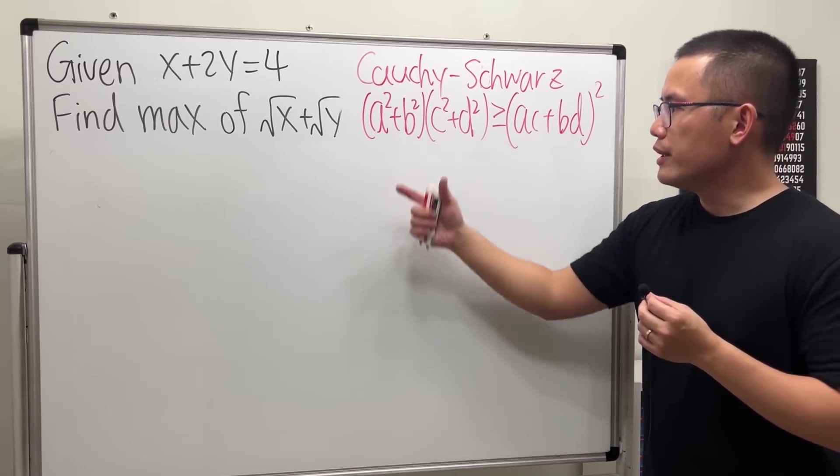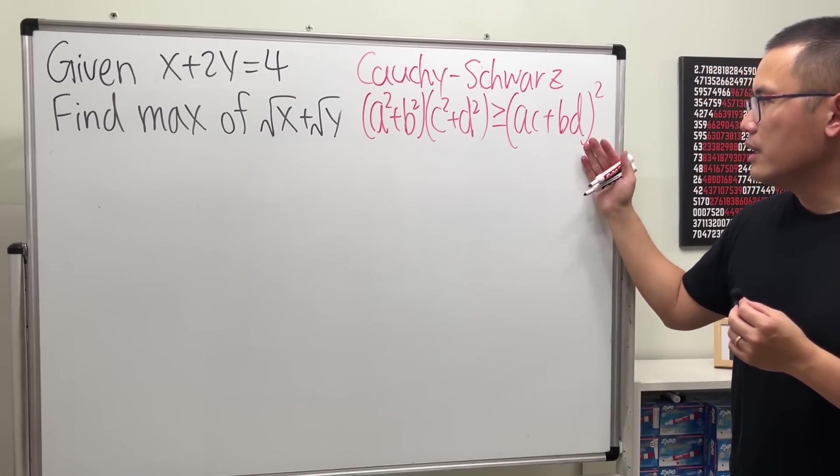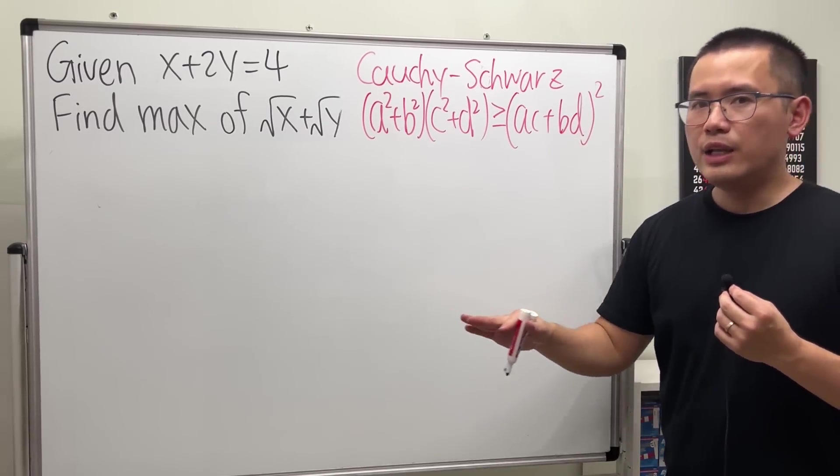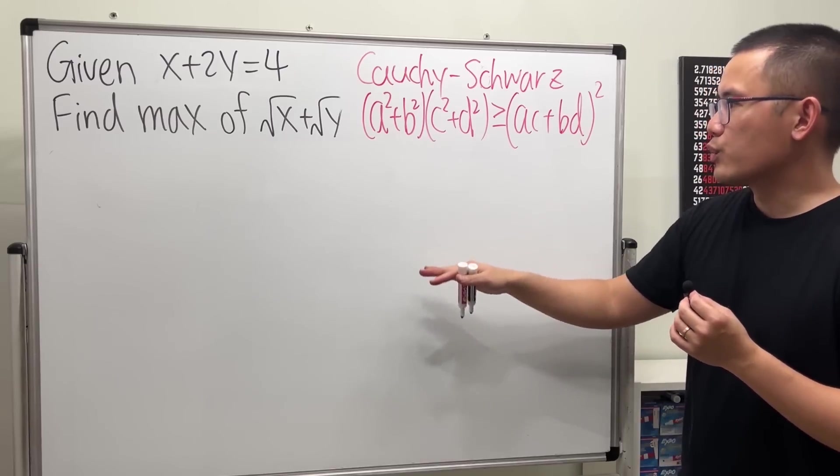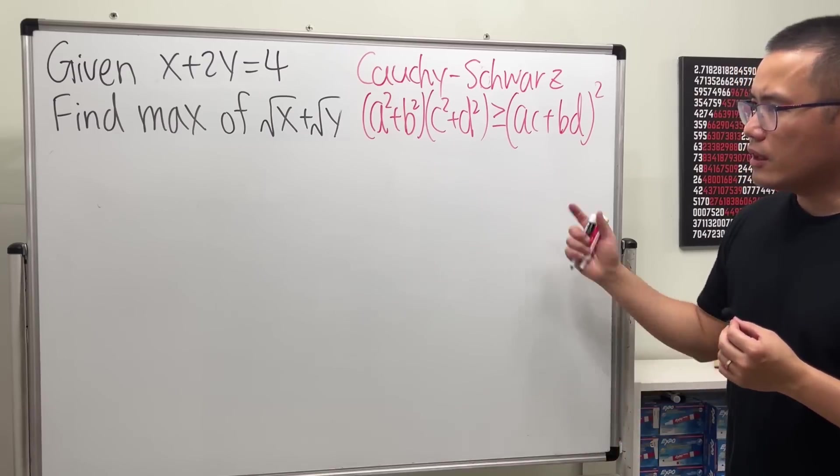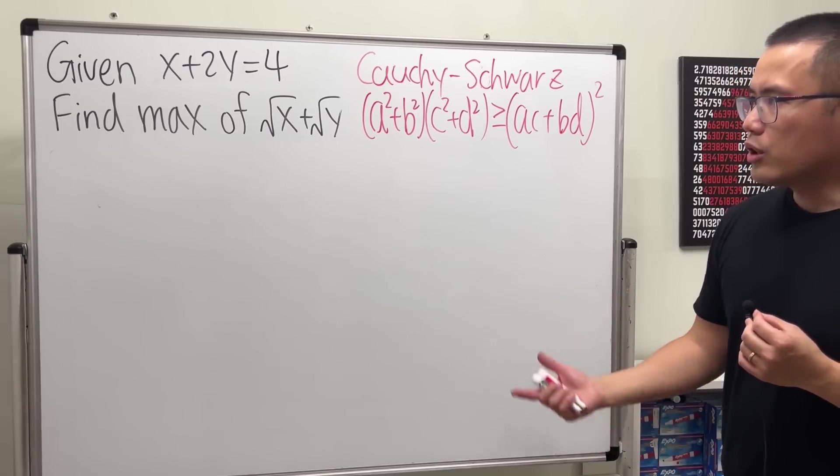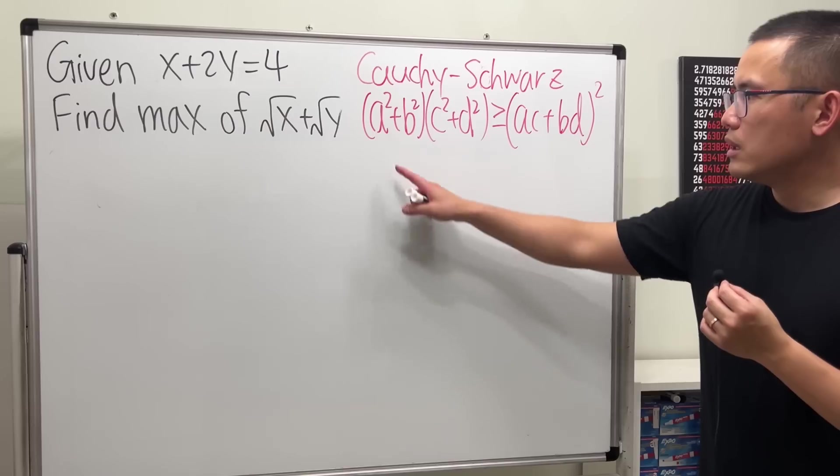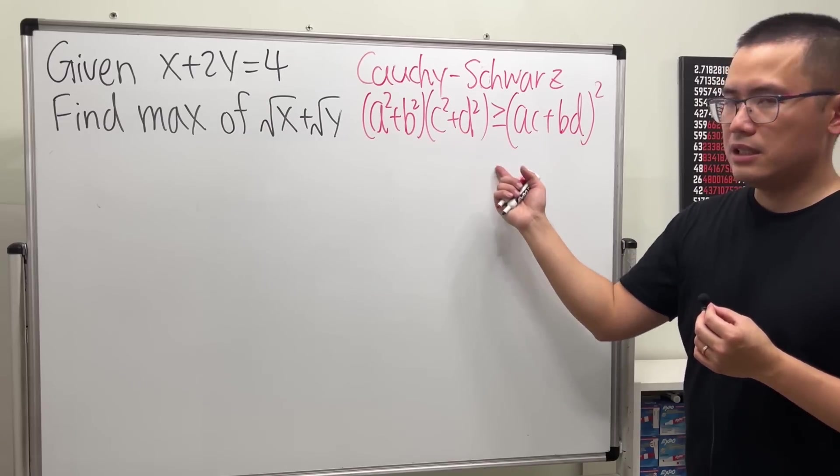And to see why this is true, you can just multiply out everything and then put this to the other side, and you will see that it's a complete square, it will be greater than or equal to 0. I will leave that to you. For now, let's talk about how we can use this. Because the goal is to figure out a, b, c, d.